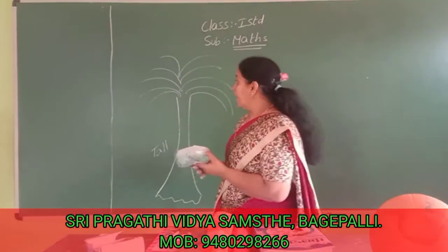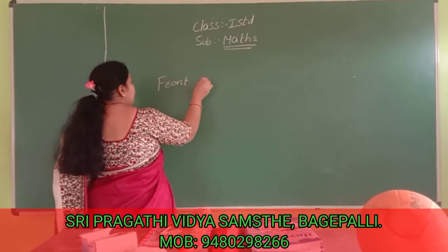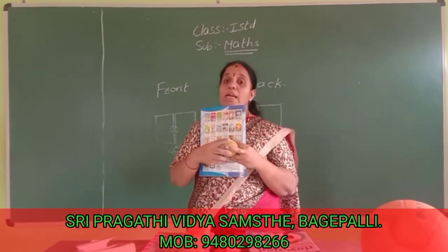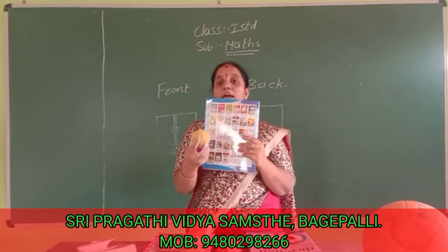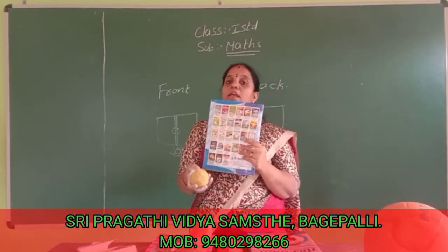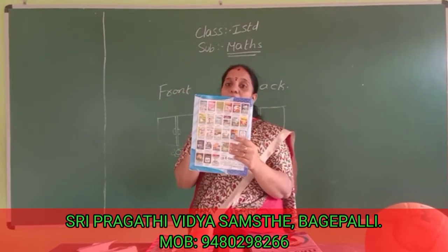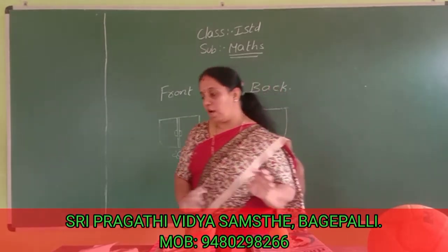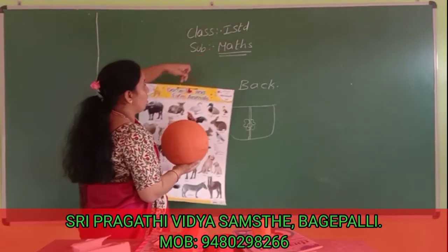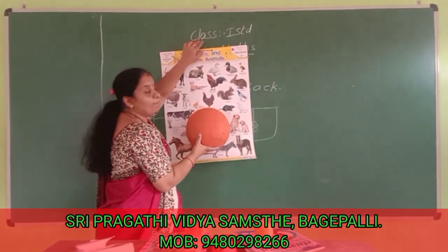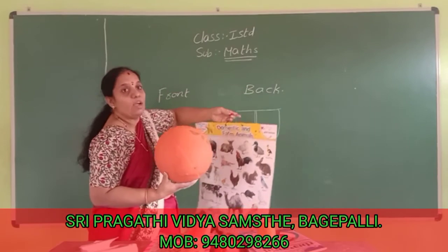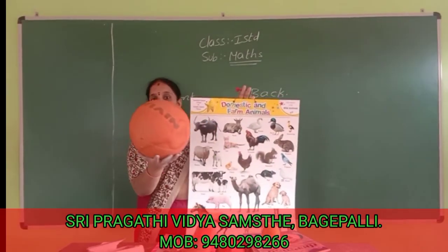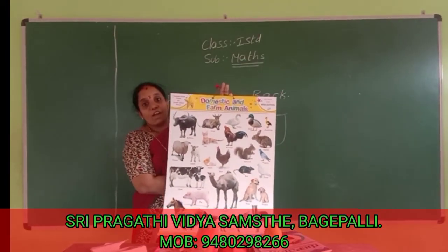Now we will go to front and back. Here one book is there and one ball is there. The ball is in front of the book. Now the ball is on the back side of the book. See here — this is a chart and this is a ball. We will keep the ball in front of the chart. We will keep the ball on the back side of the chart — that means we say: back side of the chart.